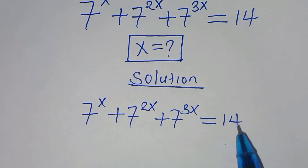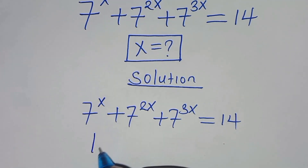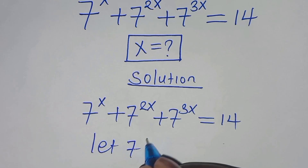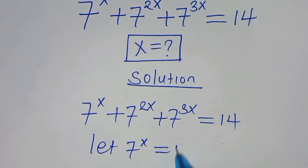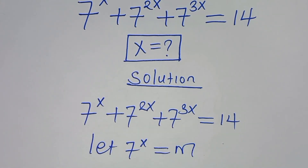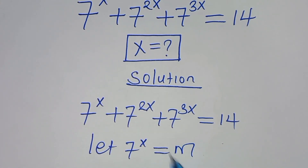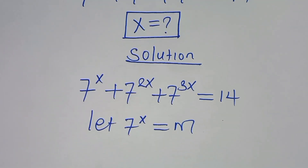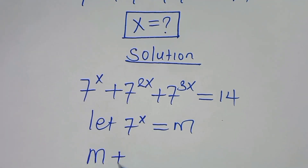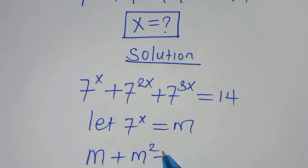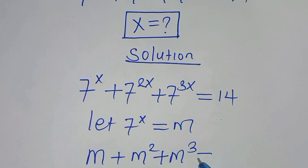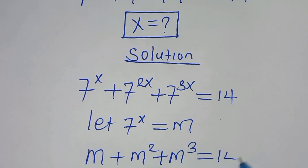The next step: we can let 7 to the power x be equal to m. So let's substitute this. We have m plus m squared plus m to the power 3, and this is equal to 14.